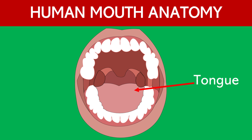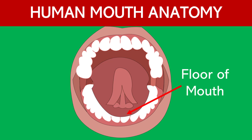Tongue. The tongue is divided into different parts: the tip, the body or middle part, and the base or back part. It helps with tasting, chewing, swallowing, and speaking. Floor of the mouth. This is the area under the tongue, including the tissues and glands that produce saliva.